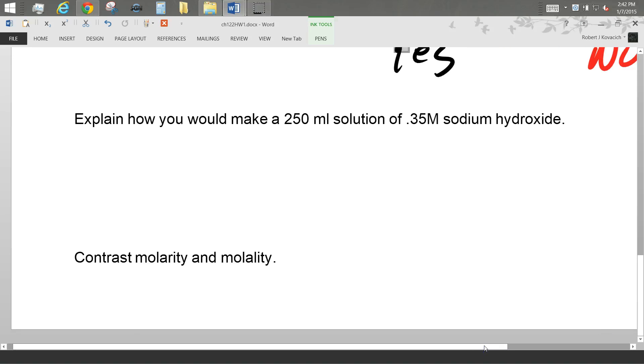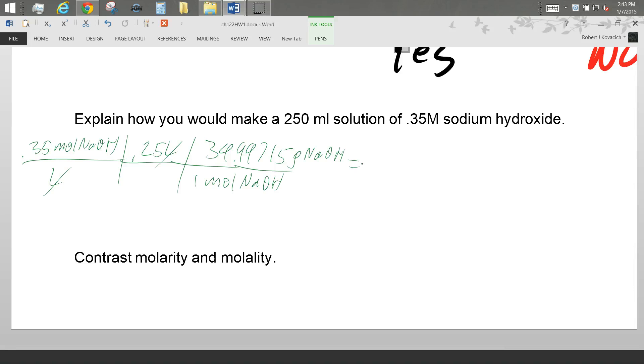Explain how you'd make 250 milliliter solution of 0.35 molar sodium hydroxide. Okay, so I need to know how many grams of sodium hydroxide I'm going to put in here. So I'll start off with this 0.35 moles NaOH divided by liters. I've only got 0.25 liters. And then for every one mole NaOH, that's 39.99715 grams NaOH. Okay, so we've got 0.35 times 0.25 times 39.99715. So it looks like 3.5 grams NaOH.